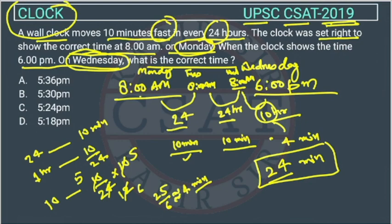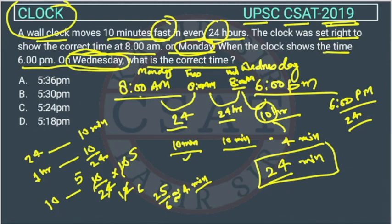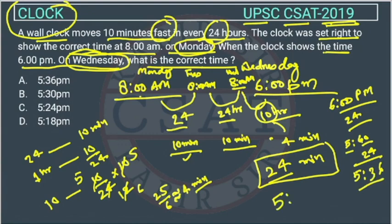The clock is showing 6 pm, so what is the correct time? The correct time will be 24 minutes before 6 pm because the clock is 24 minutes fast. We convert: 6:00 pm becomes 5 hours 60 minutes, and subtracting 24 minutes — 60 minus 24 is 36 minutes and the hour becomes 5 — so the correct time is 5:36 pm in the evening.